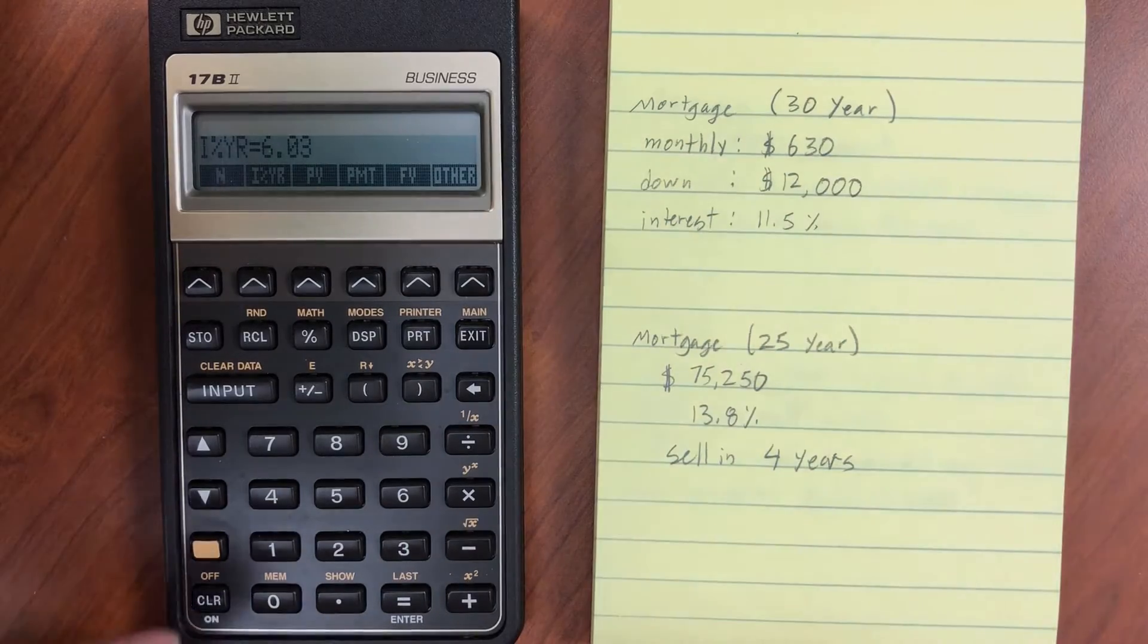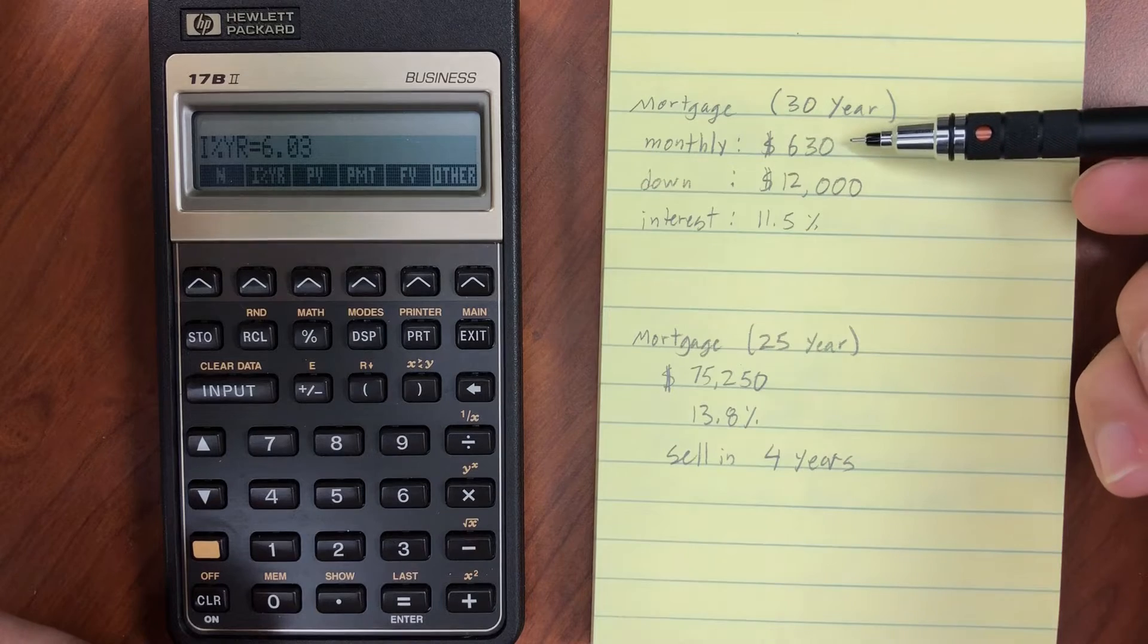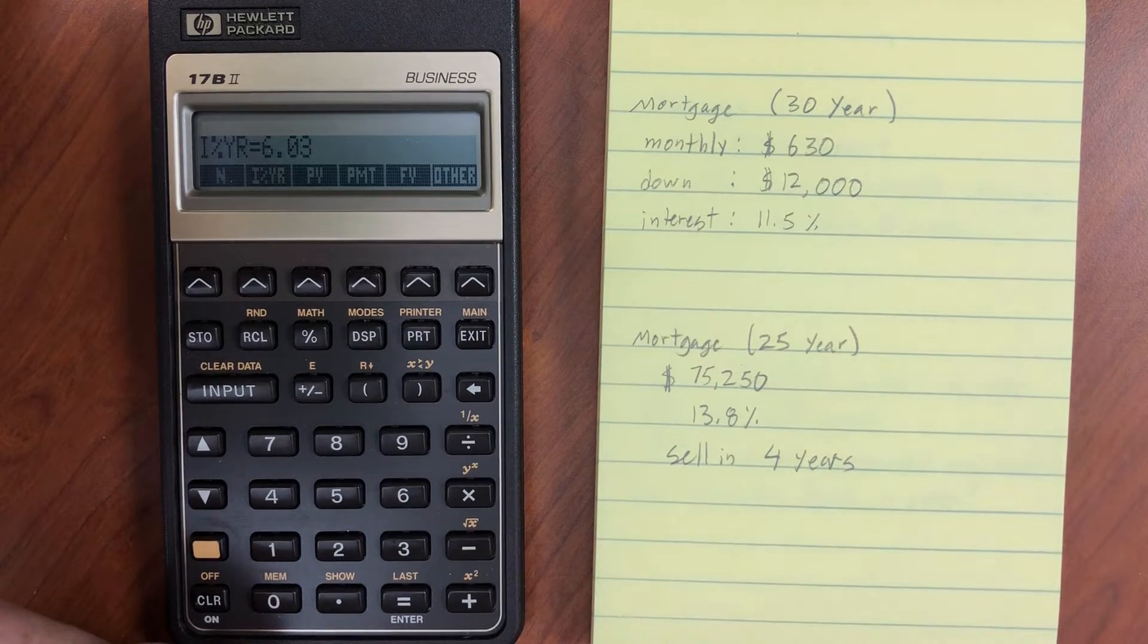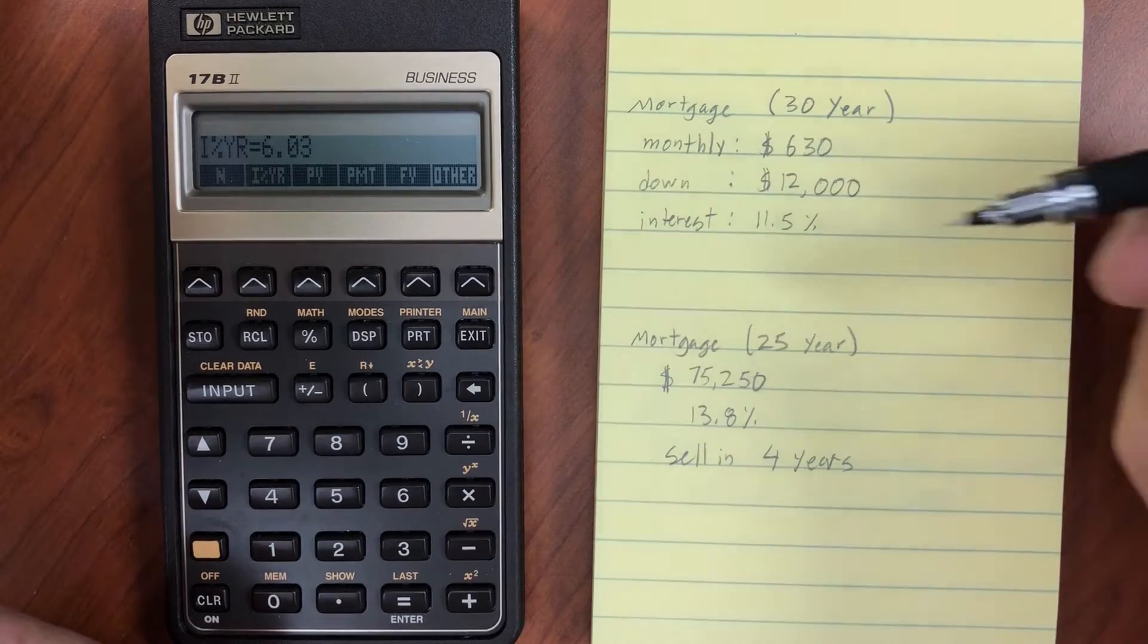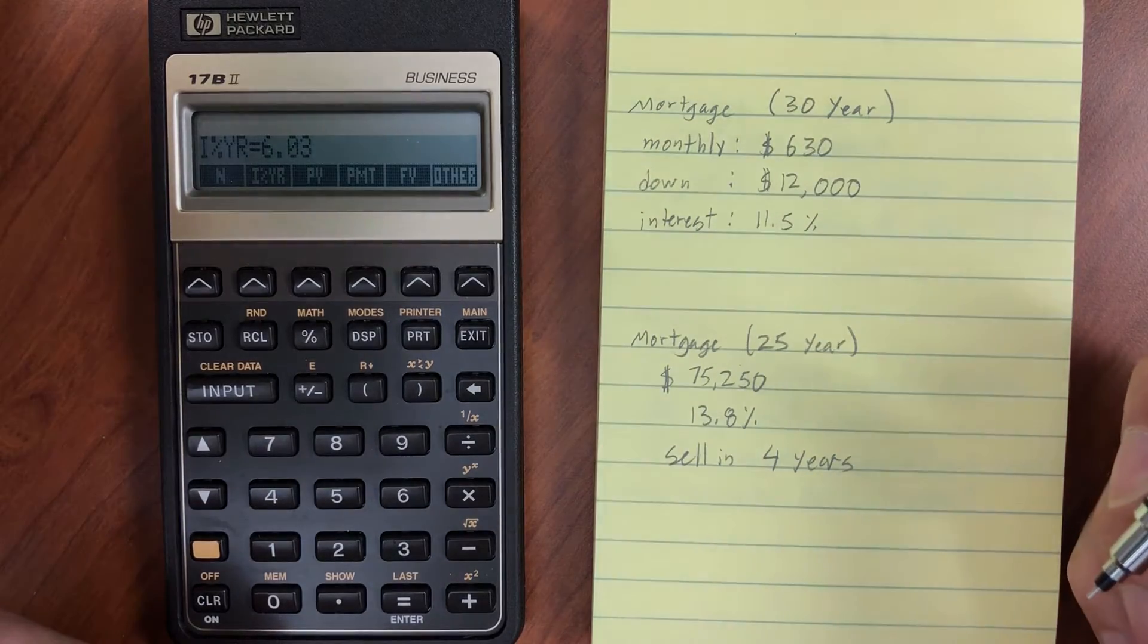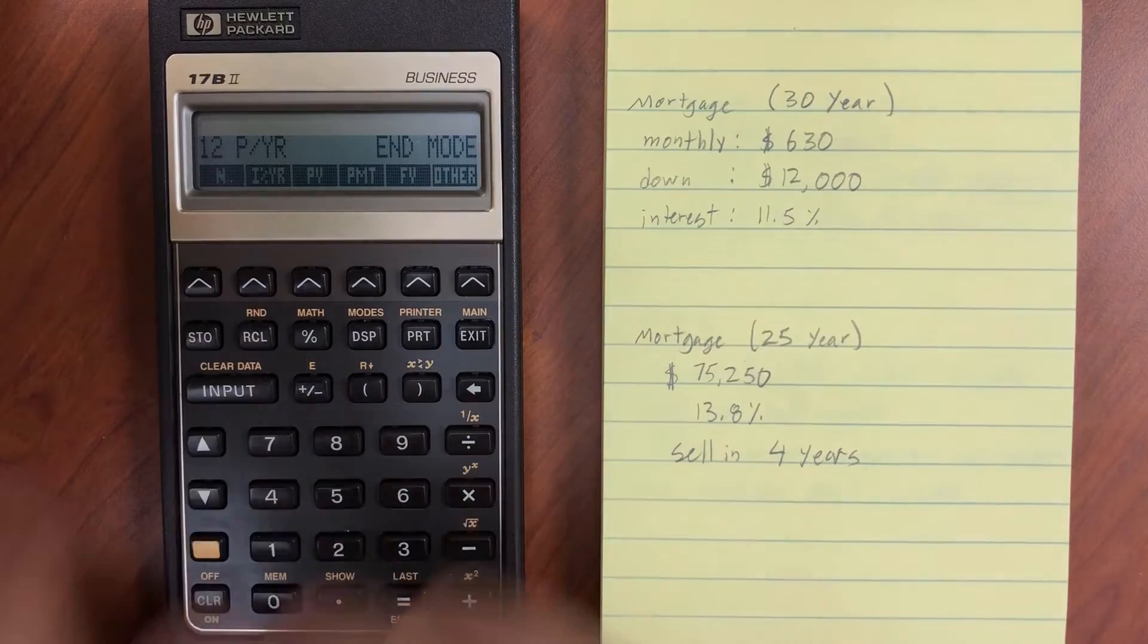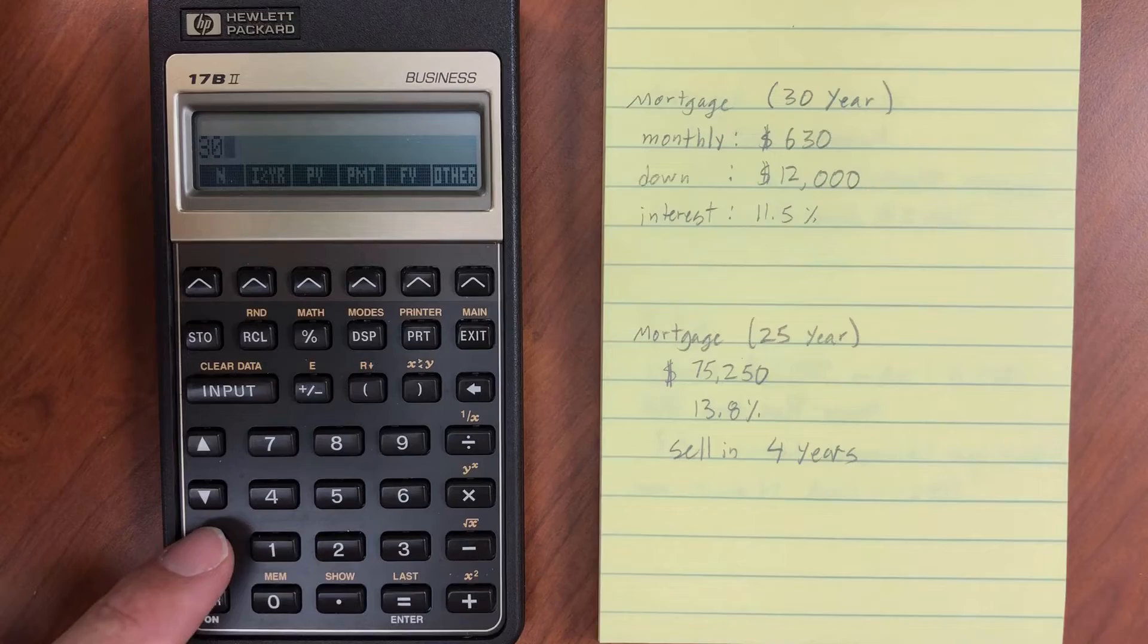Let's start with another example. So here's a 30-year mortgage. We've got monthly payments. We're going to put $12,000 down, and we have an interest of 11.5%. So we can afford this much per month. We have this much to put down. Very high interest rates when this calculator came out and the manual was produced for it. Interest rates were higher than they are now. But let's go ahead and clear our data. 12 periods per year, and our mortgage is 30 years. So let's go ahead and do 30.